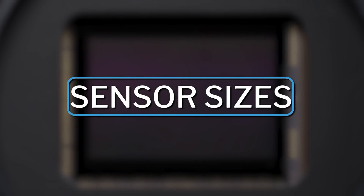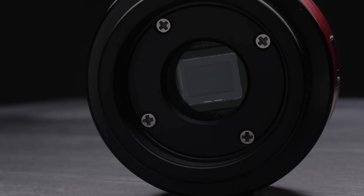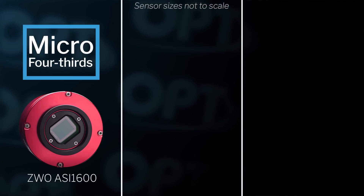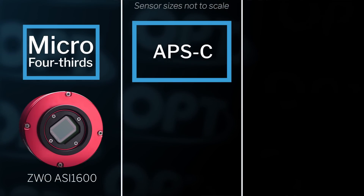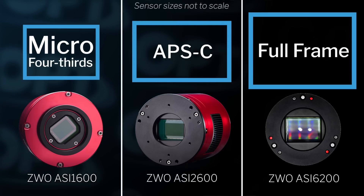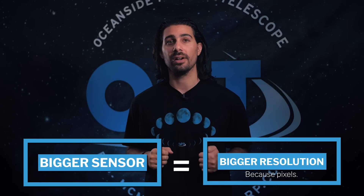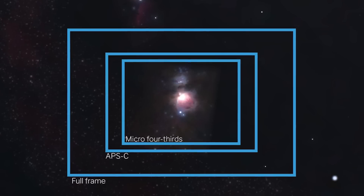Let's first talk about sensor sizes. The reflective thingamajigger inside of the camera is the sensor, and it comes in so many different shapes and sizes. When it comes to sensors, size matters depending on what you're shooting. A few main sensor sizes are the micro four-thirds like the ASI 1600, the APS-C like the ASI 2600, and the full frame like the ASI 6200. With a bigger sensor you have the advantage of bigger resolution due to more pixels, and also a bigger field of view.